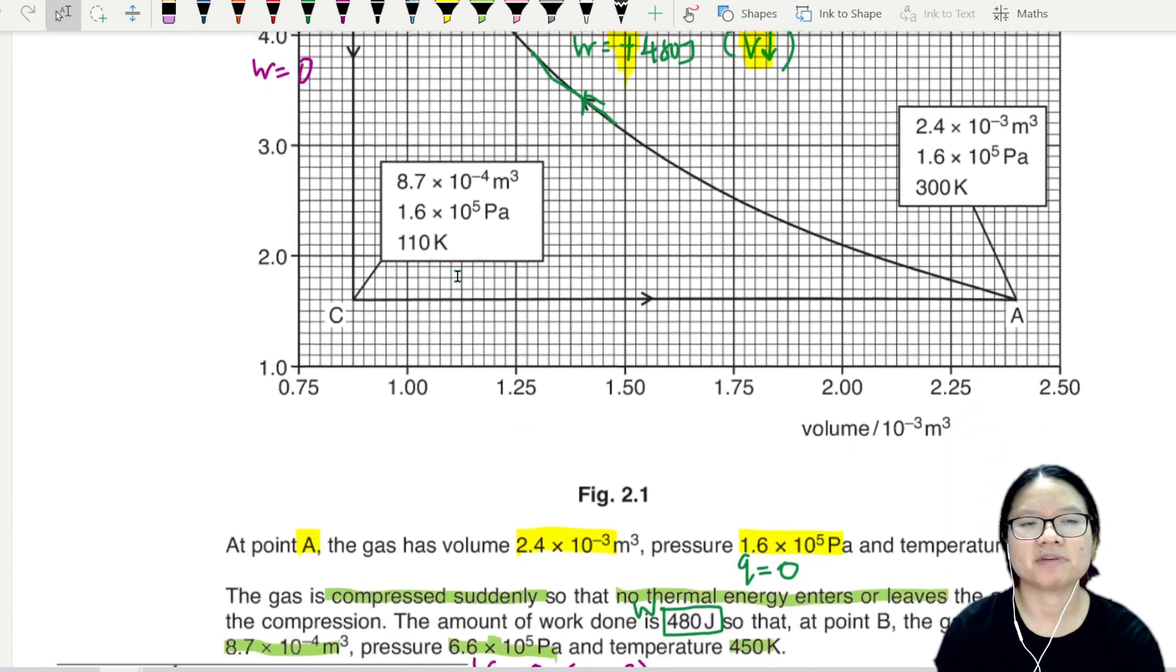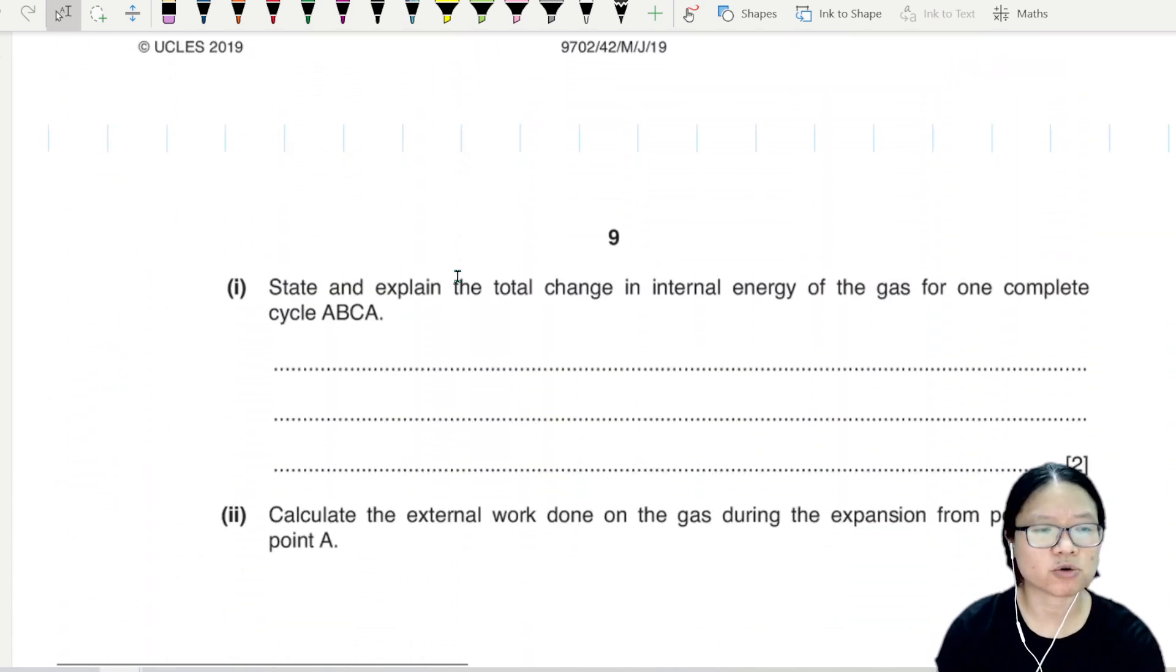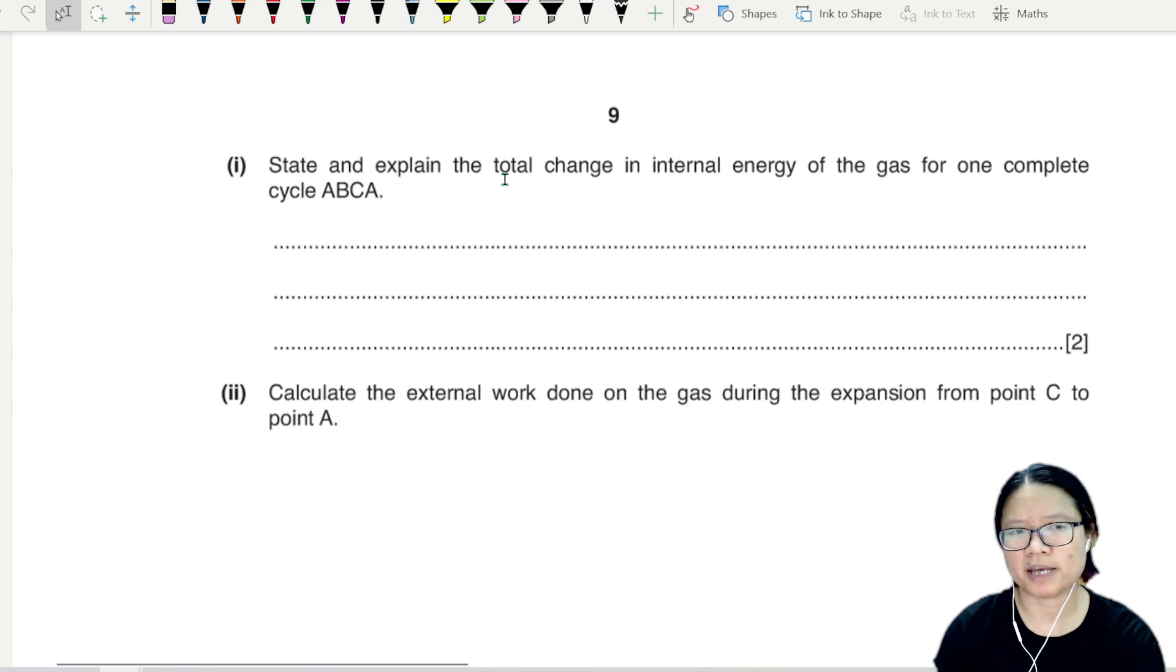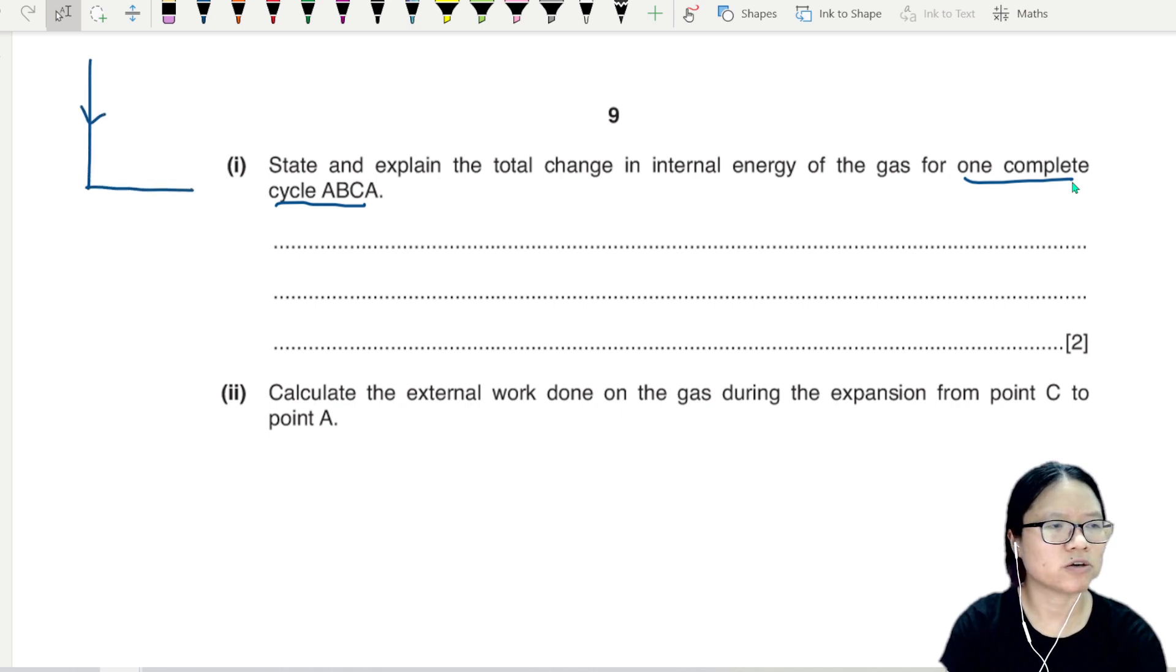Let's see if we have some information to help us figure out whether it's plus or minus. Part one states: explain the total change in internal energy for one complete cycle. So if it's one complete cycle, meaning you go in this direction, you return back to the initial state.